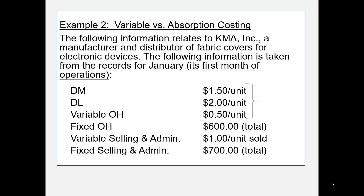Note that the variable cost of production is $4 per unit. Sometimes, rather than giving the individual amounts, you will simply see a statement that variable production costs are $4 per unit. And of course, that includes direct material, direct labor, and variable overhead.